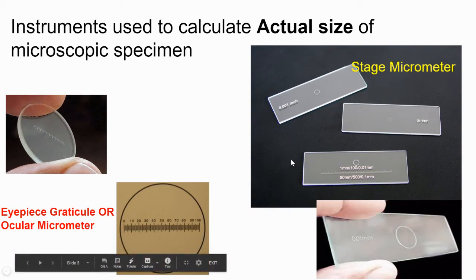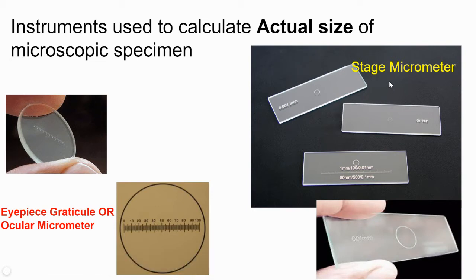Now let's look at the stage micrometer. All of you have dealt with glass slides while doing microscopic observations in ninth and tenth grade. This is a normal glass slide, but it is etched — meaning